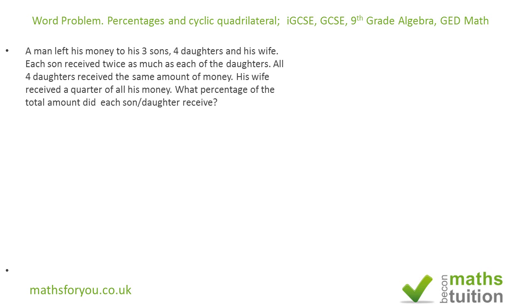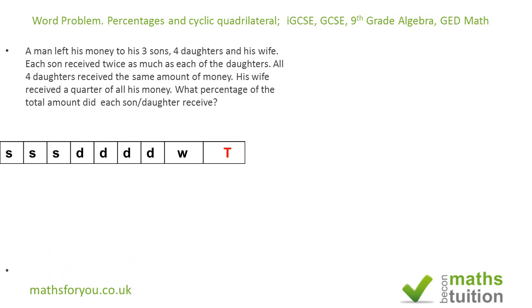The first question: a man left his money to his three sons, four daughters, and his wife. Each son received twice as much as each of the daughters. All four daughters received this amount of money. Meanwhile, his wife received a quarter of all his money. What percentage of the total amount did each son or each daughter receive? I've illustrated this graphically — three sons, four daughters, and a wife, plus a total.